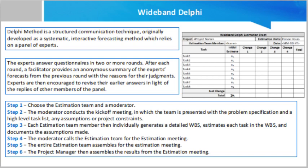Step 5.10 — steps 5.7, 5.8, and 5.9 are repeated until one of the following criteria is met: results have converged to an acceptably narrow range; all team members are unwilling to change their latest estimates; or the allotted estimation meeting time is over. Step 6 — the project manager then assembles the results from the estimation meeting.